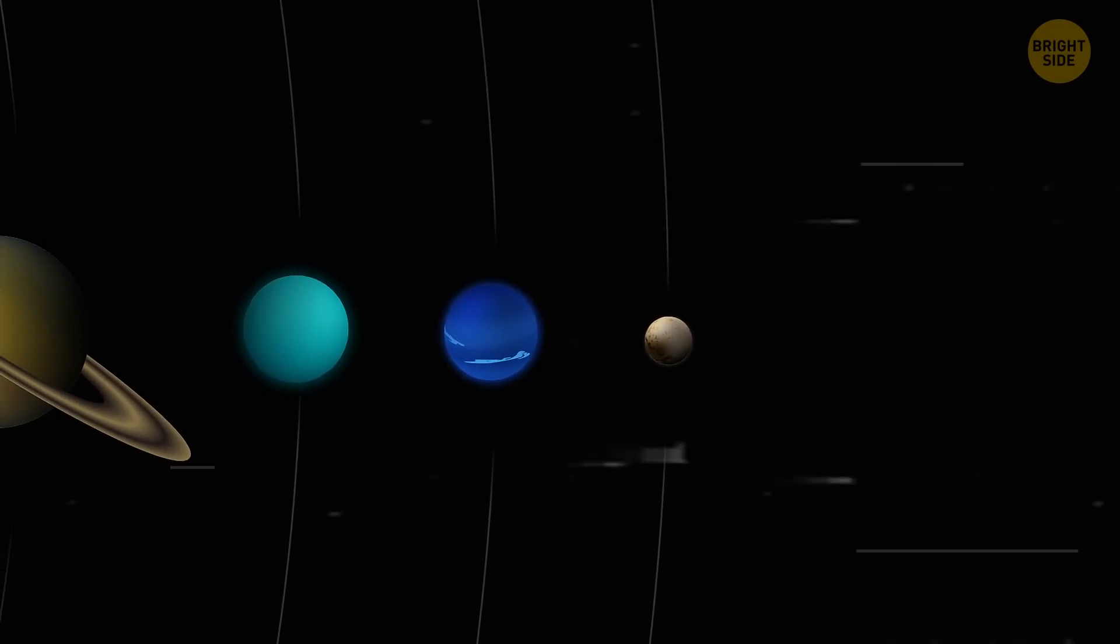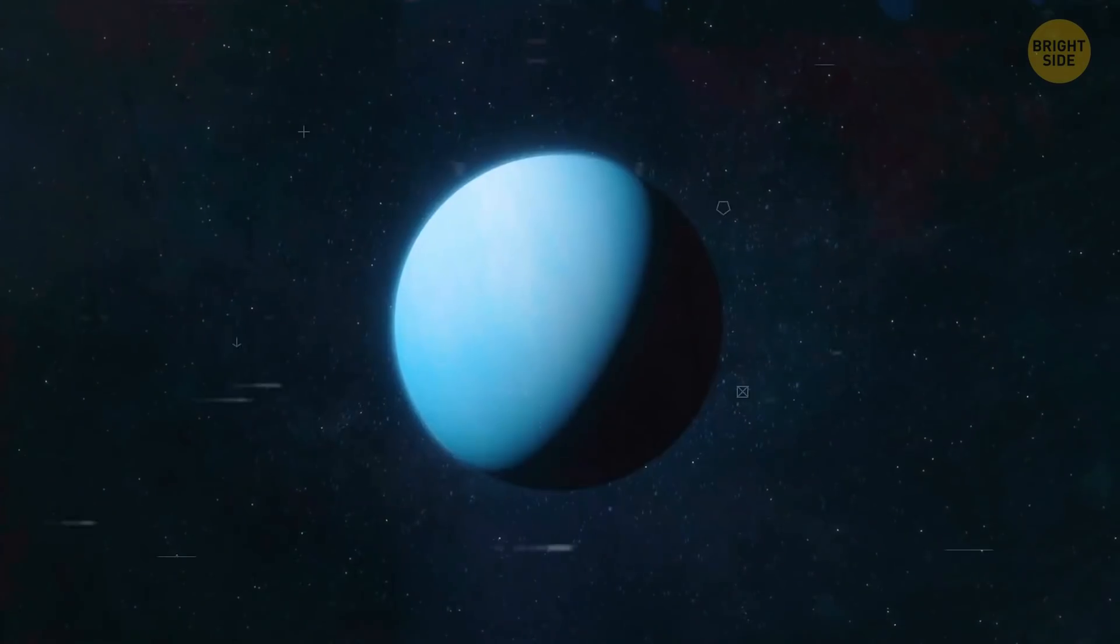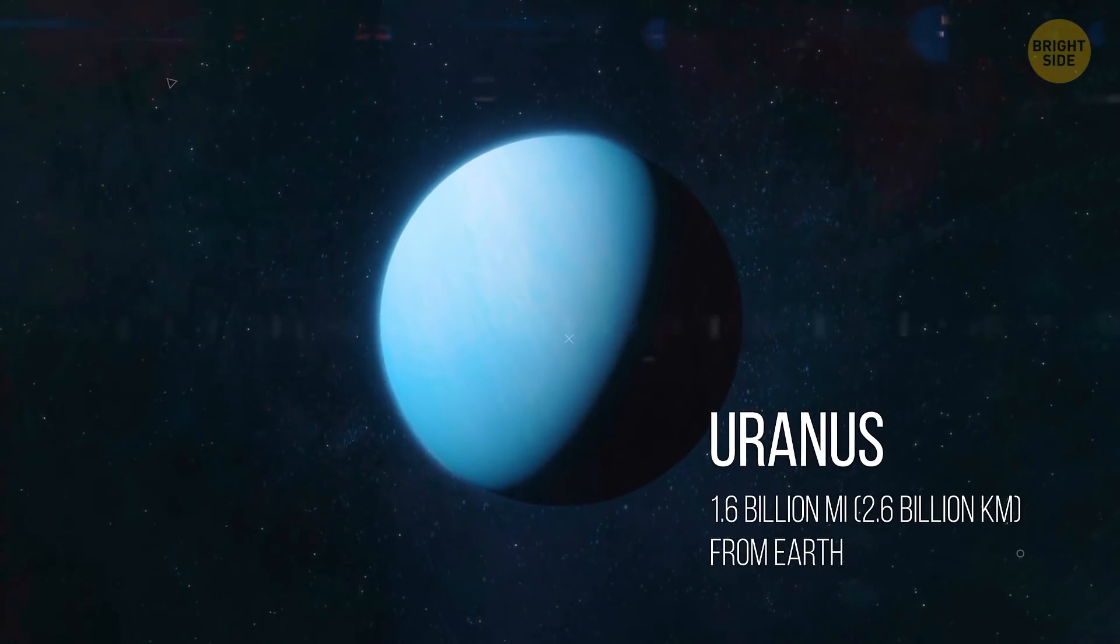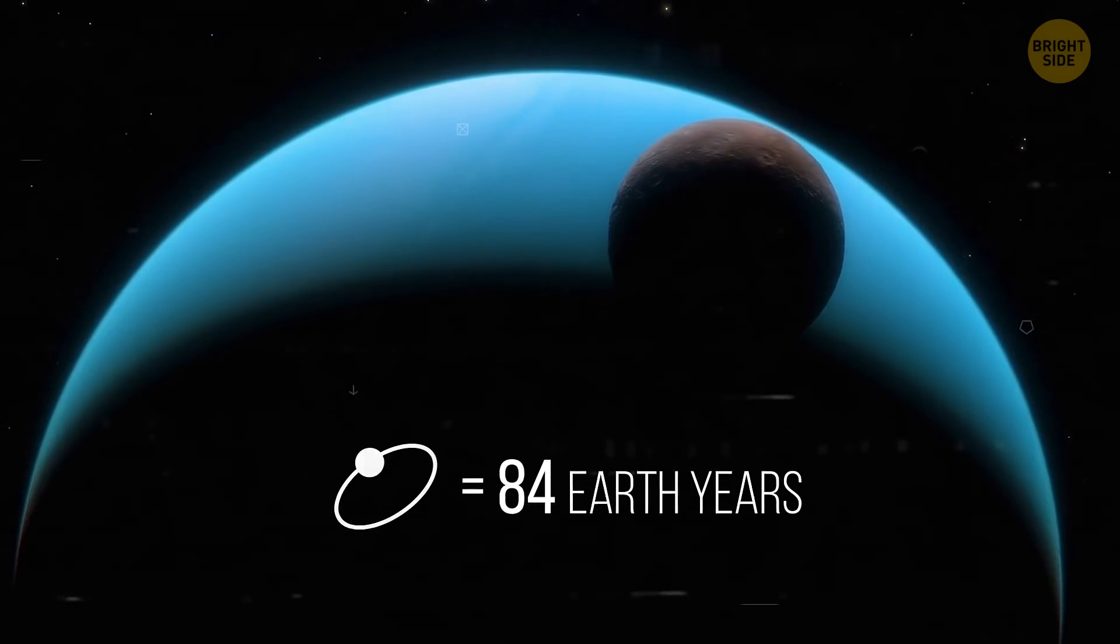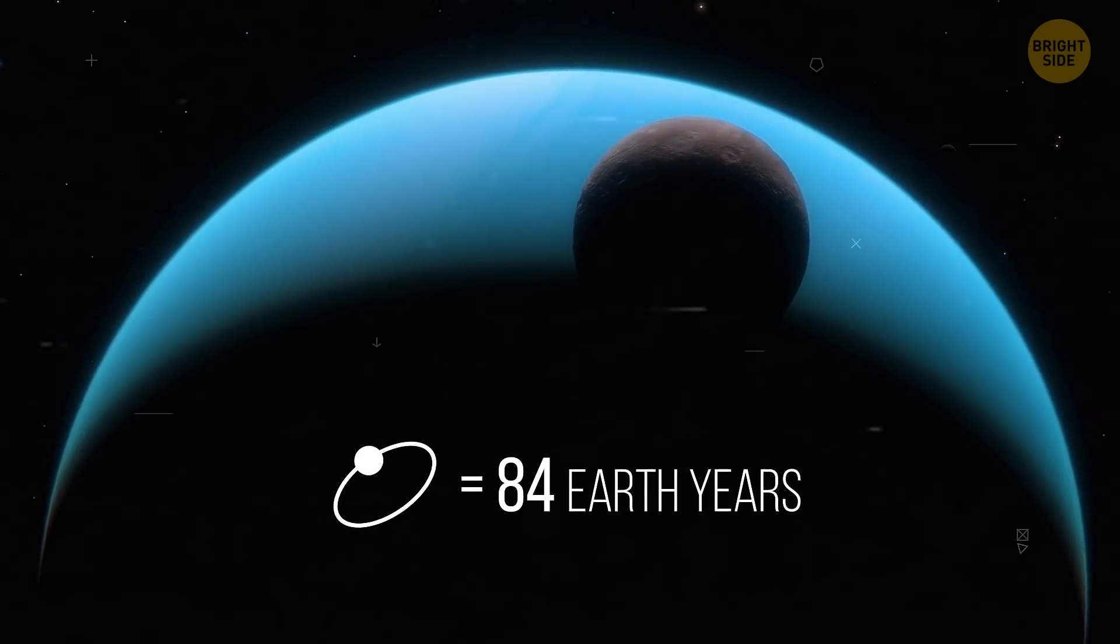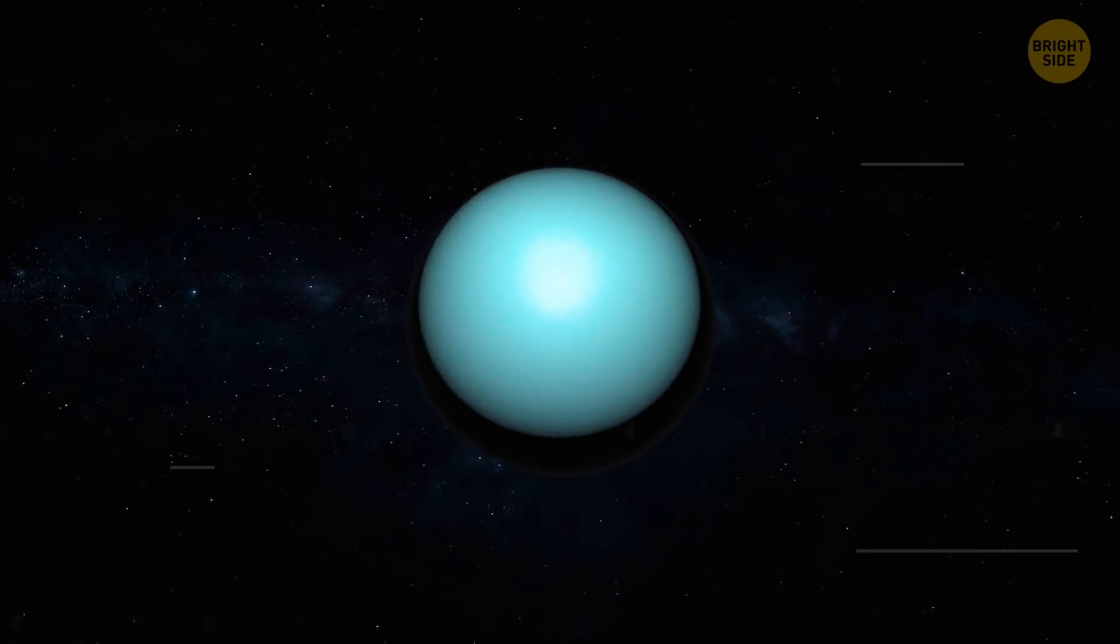As we make our way closer to the Sun, we pass the next gas giant, Uranus. That non-conformist planet that goes around the Sun, basically rolling on its side. One full orbit is 84 Earth years. So, you might be lucky enough to celebrate your first birthday in your whole life there. Only one party, so you better make it count.